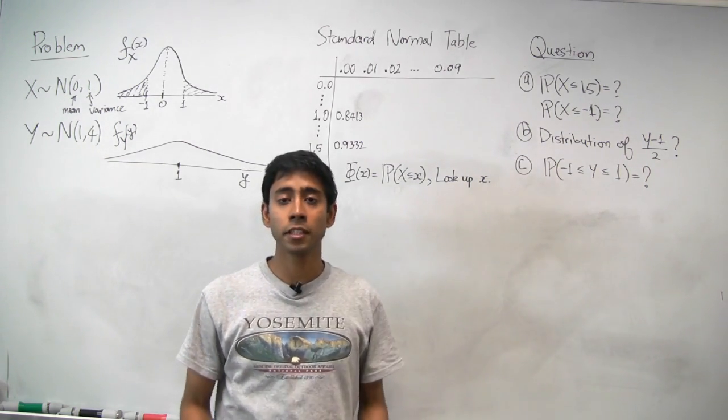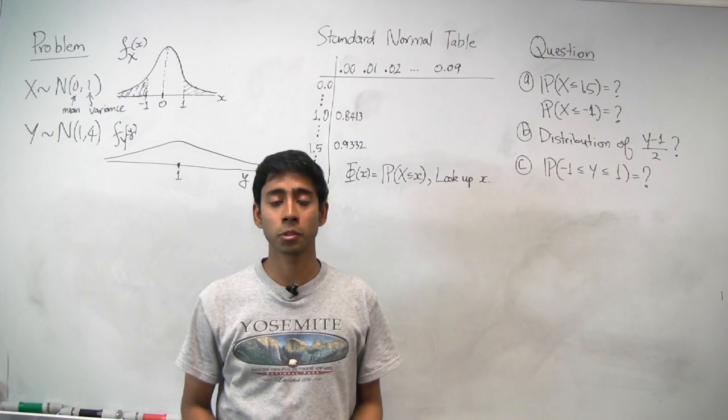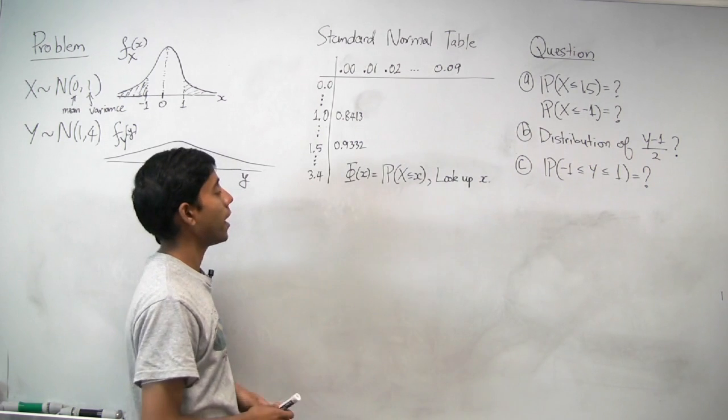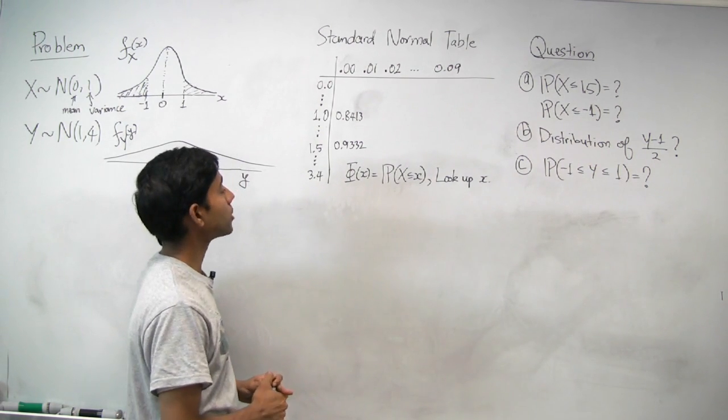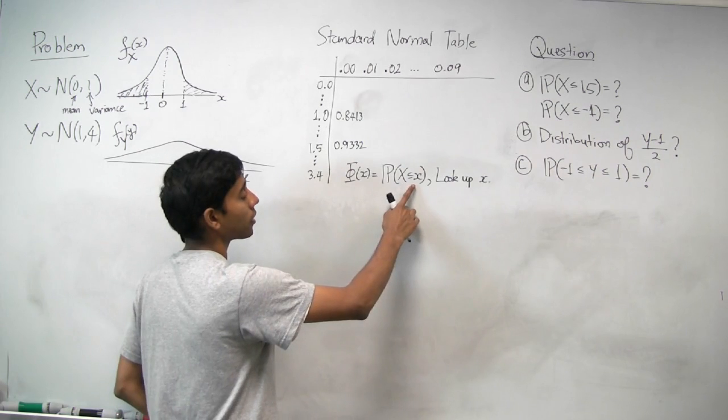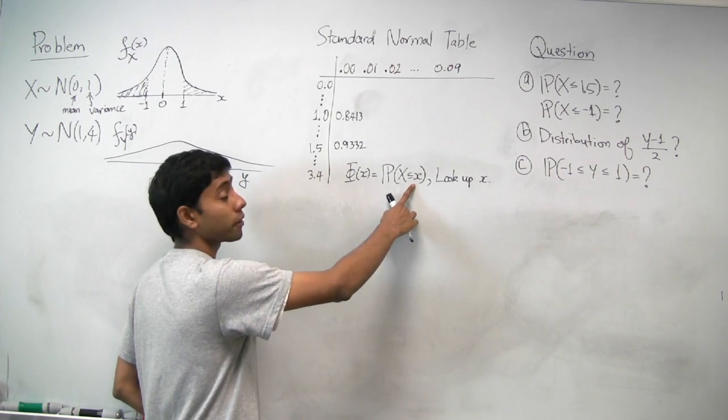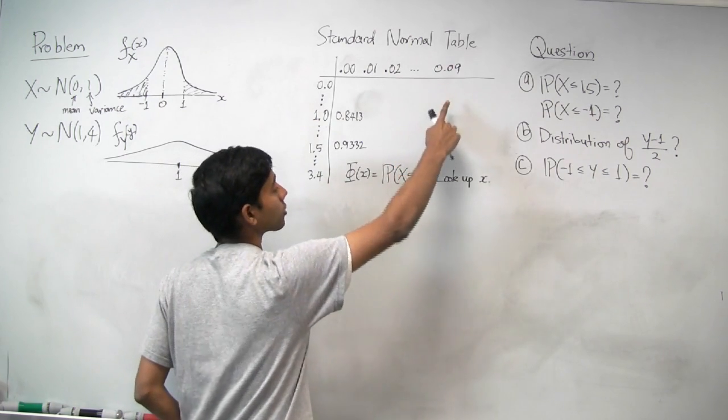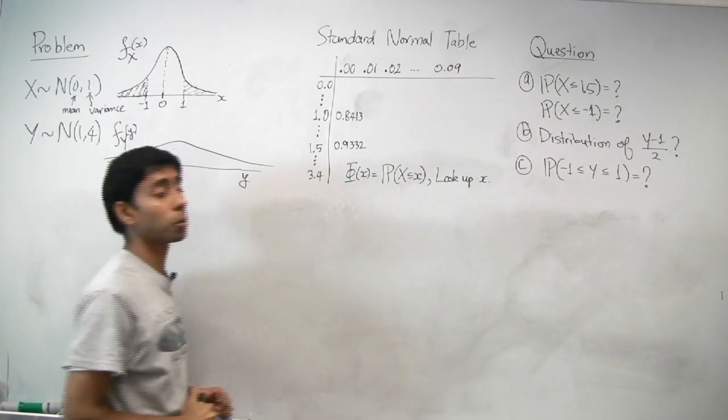For the normal CDF, we don't have a closed-form expression, and so people generally tabulate values for the standard normal case. So if we want little x equal to 3.49, we just look for 3.4 along the rows and 0.09 along the columns, and then pick the value appropriately.